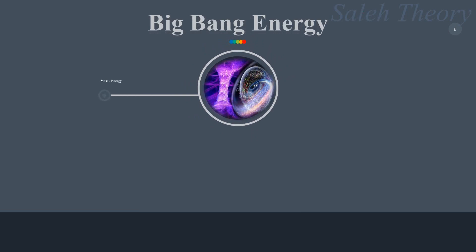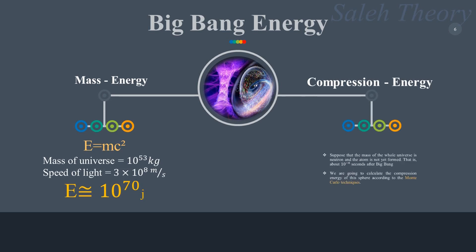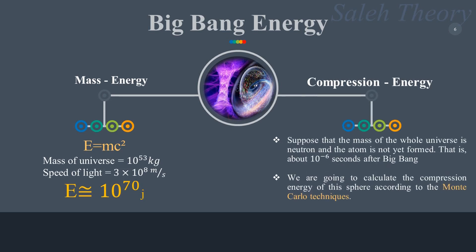According to the mass-energy formula, the total energy of the universe is 10 to the power of 70 joules. Now suppose that the mass of the whole universe is a neutron star and atoms have not yet formed. We are going to calculate the compression energy of this neutron star according to the Monte Carlo techniques.